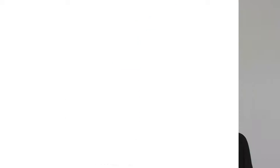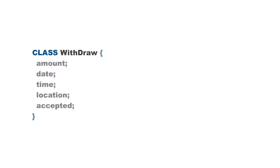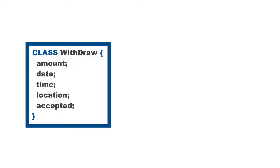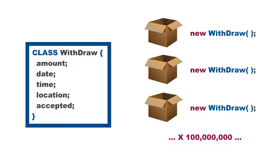If we have mass production of objects in the real world, we must be able to have mass production of objects in the programming realm. For example, if you had a bank account object — say this is a big international bank — banks need to create withdrawal objects: how much you're going to withdraw, how much has been spent, in what location. That's a template for each withdrawal on a bank account, and we need to replicate that object hundreds of millions of times for all the transactions that go off every single day.